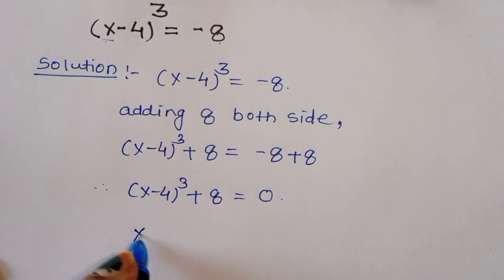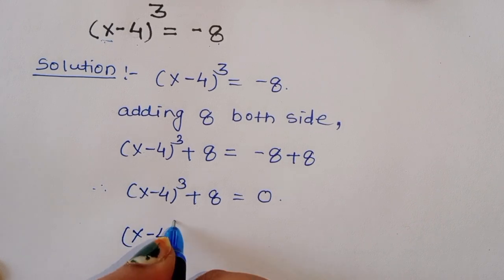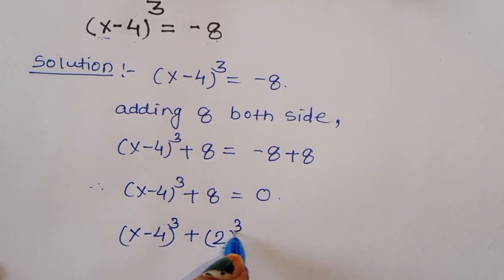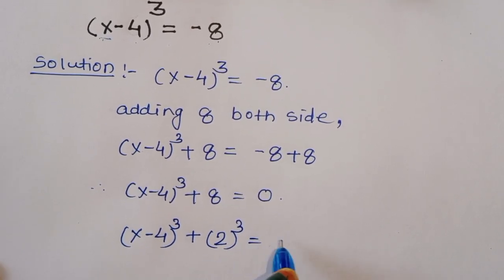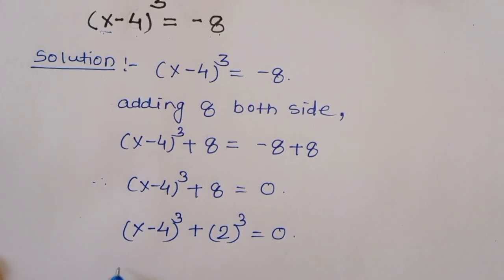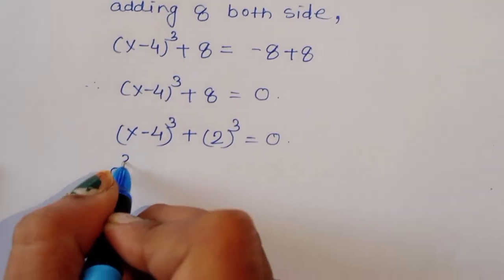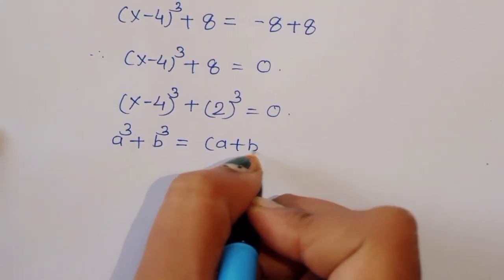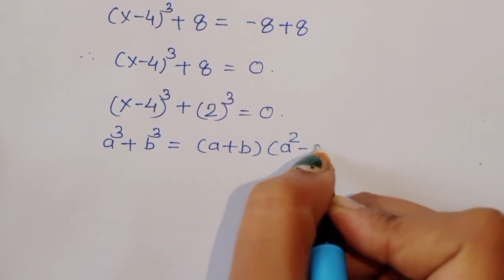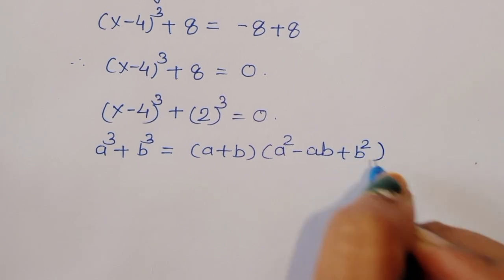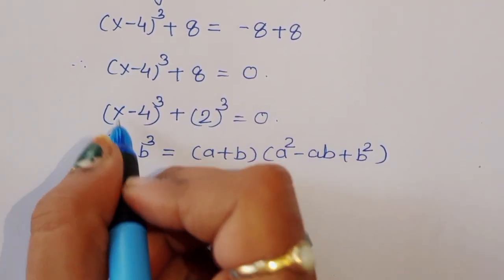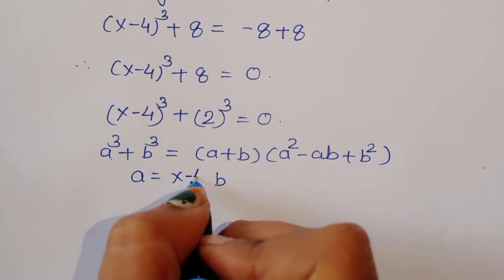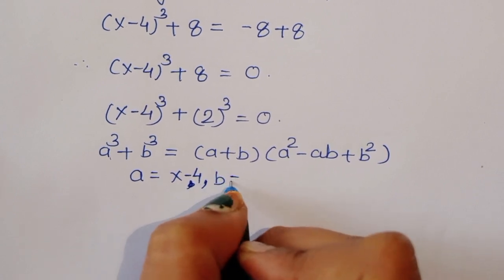Now we can write (x - 4)³ + 8. We can write 8 as 2 raised to 3. We know the formula: a³ + b³ = (a + b)(a² - ab + b²). Here a = (x - 4) and b = 2.